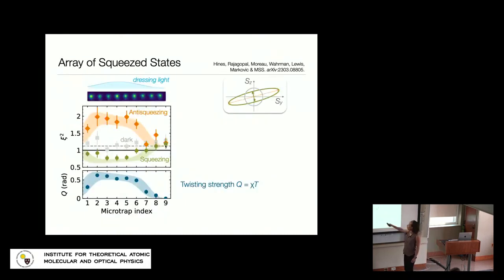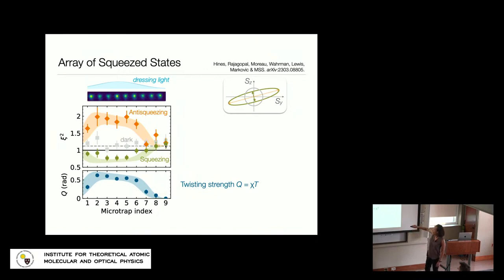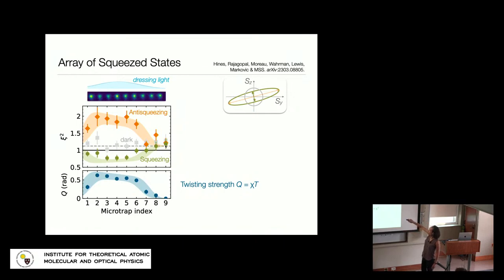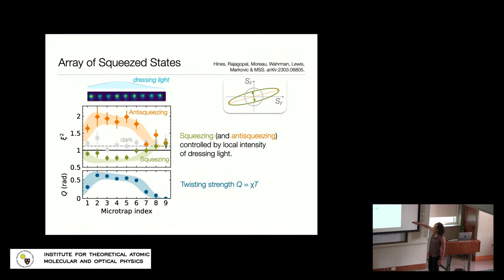Using the parallel measurements in the array, we can examine the dependence on dressing-light intensity across different microtraps. The bottom plot in blue shows the strength of twisting — mean-field interaction times time — independently calibrated and set by the dressing-light intensity. The beam profile is slightly non-Gaussian in this run, but we can measure it. Based on this twisting strength, using the one-axis twisting model, we predict the squeezing (green region) and anti-squeezing in the orthogonal axis (orange region). The measured data matches quite well, consistent with squeezing and anti-squeezing governed by the local dressing-light intensity. The gray points show what we'd see without light — we start slightly worse than the standard quantum limit due to imperfect contrast from inhomogeneous broadening in the trap — but the dressing brings us below it.